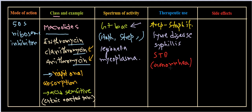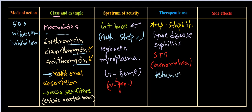Gonorrhea — caused by Neisseria gonorrhoeae — is gram negative, so it is an example of some gram negative bacteria macrolides can target. We can also use them against Chlamydia, Legionella, Mycoplasma, tetanus, pertussis, and diphtheria. There are many more infections that can be treated using macrolide antibiotics.